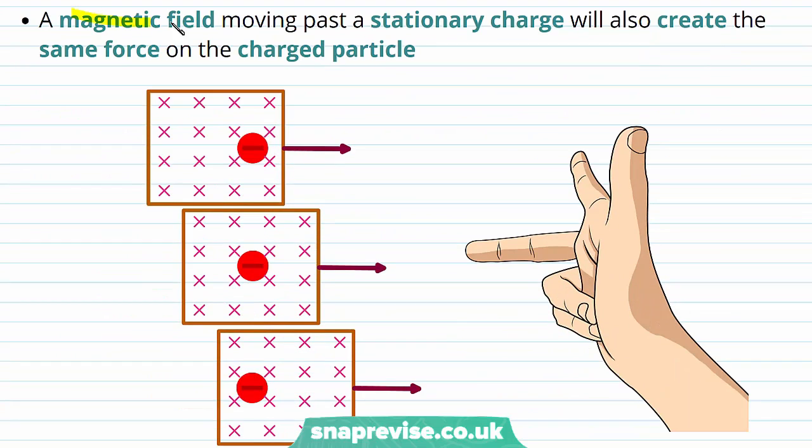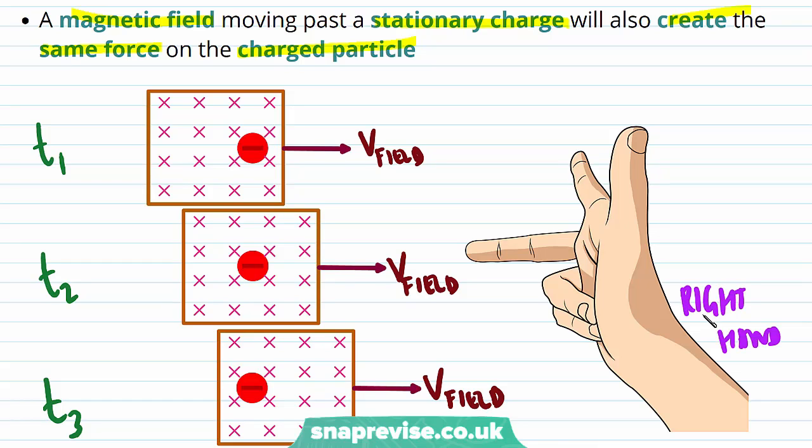A magnetic field moving past a stationary charge will also create the same force on the charged particle. In this case, we're going to look at a magnetic field that's moving, and we're going to look at it at three different times: T1, T2, and T3. You can see that the electron has remained in the same place, but the magnetic field is moving with a certain velocity to the right. Again, we're going to use our right hand to find the direction of the force on this electron. The first finger points in the direction of the field and the second finger points in the direction of the motion of charge.